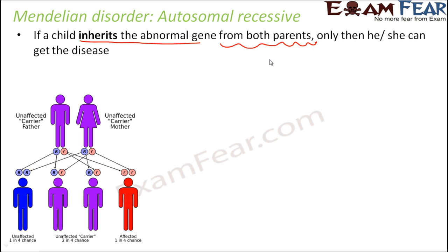Looking at an example: this is an unaffected carrier father. Whenever it is a heterozygous condition, the parent is not affected because it is a recessive inheritance pattern — the dominant trait dominates over the recessive trait. So anyone who has the small 'r' allele will have the disease only if they have two small r's. A child with two small r's will get affected, but if anyone has one small and one capital, then that person would be a carrier but not affected with the disease. This is the pattern that follows in an autosomal recessive disorder.